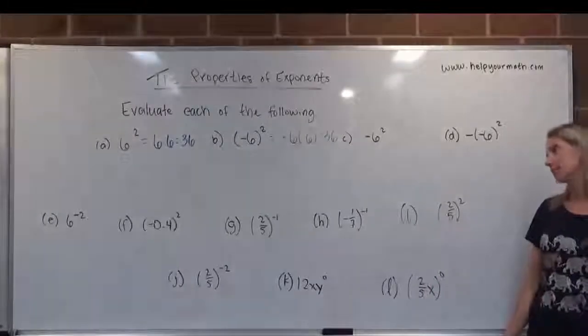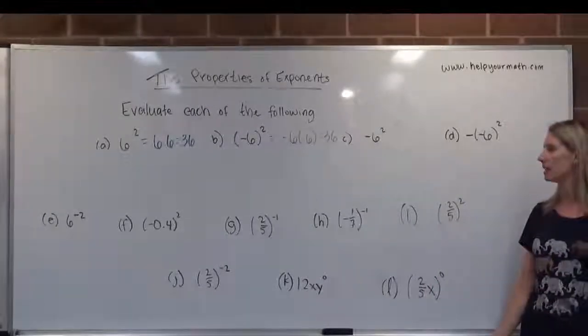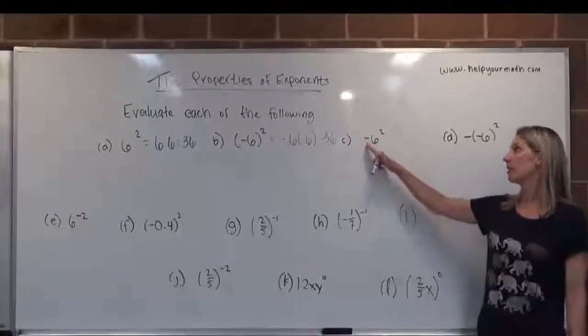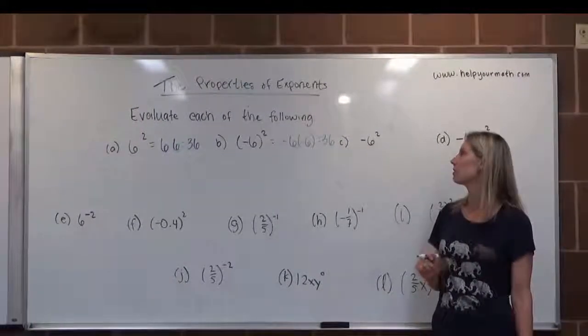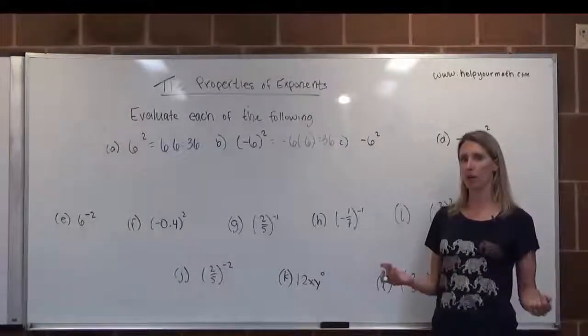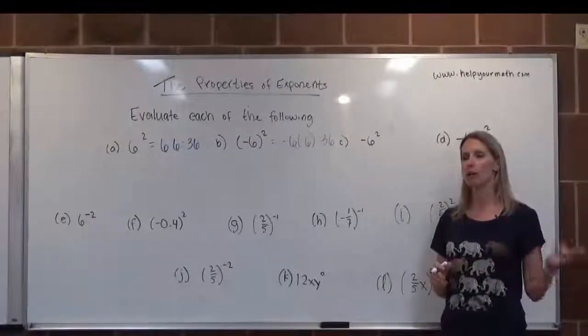Letter C, we have negative 6 squared. How is letter C different than letter B? Well, in letter C, the base is only 6. The negative is treated as multiplication. And in order of operations, exponents come before multiplication.